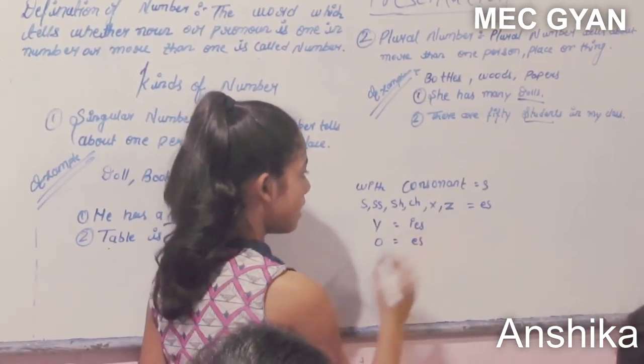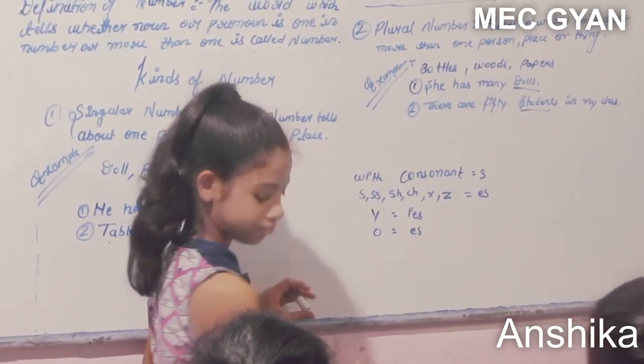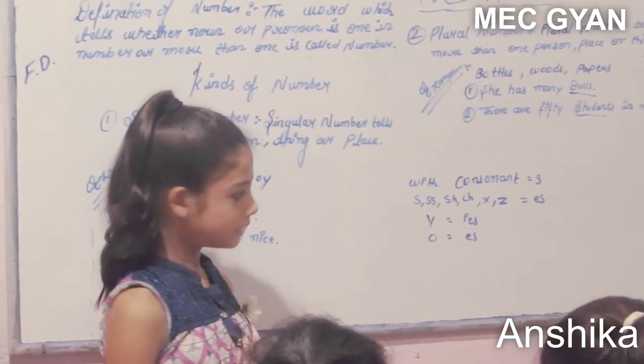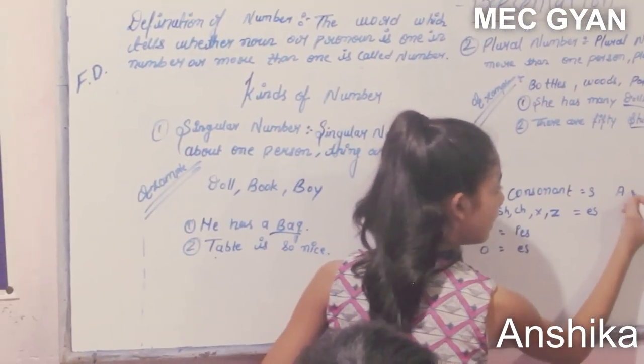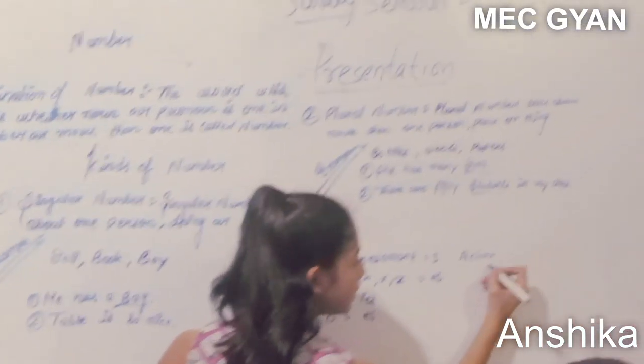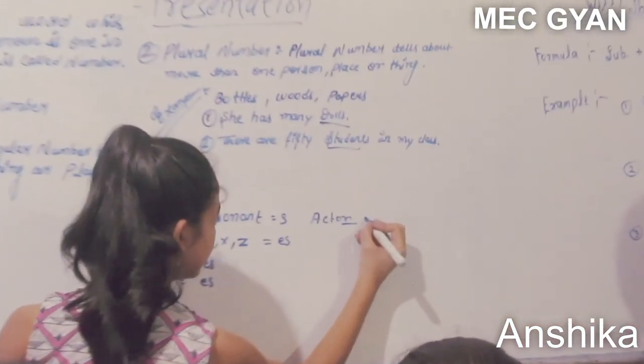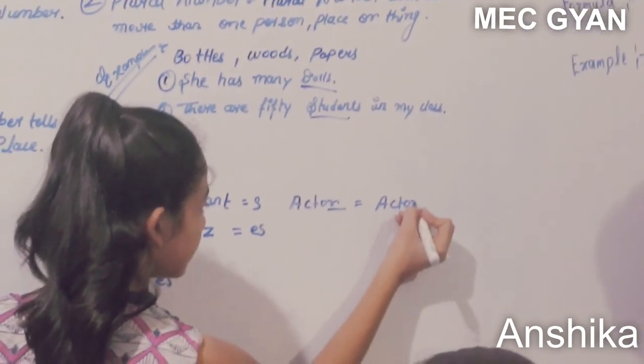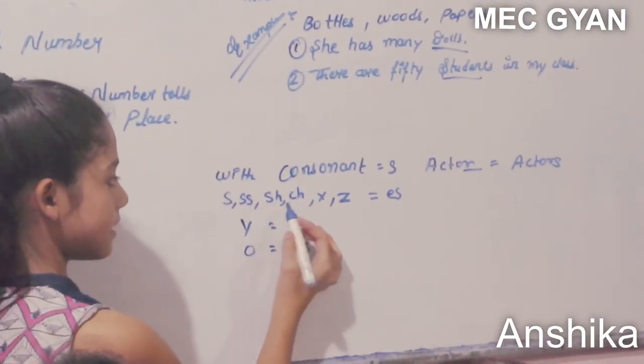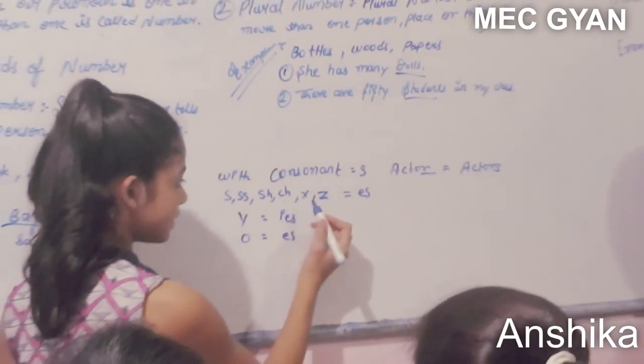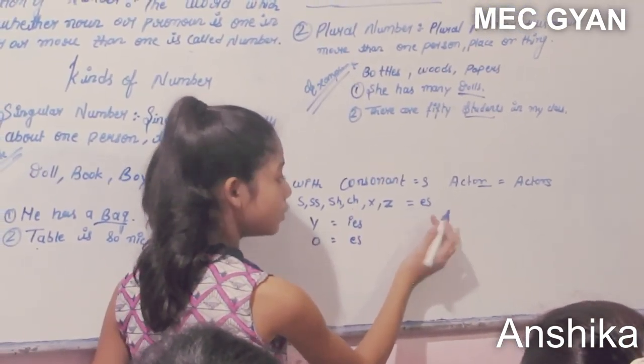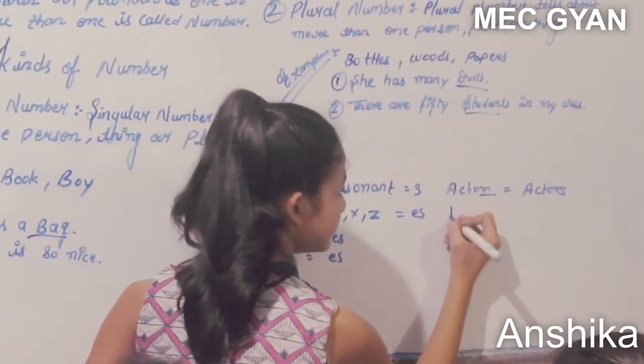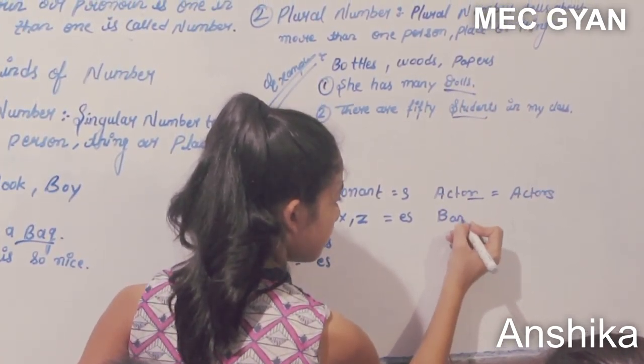With consonant, we add ES. R is a consonant, so we add ES. With S, SS, SH, CH, X, Z equals ES. Here is bench.